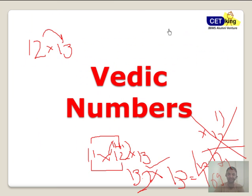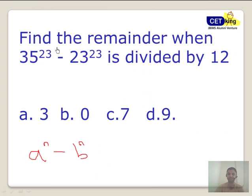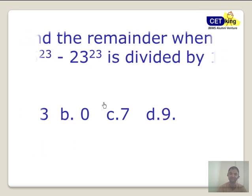From today onwards, you just have to check whether the power is odd or even. The power is odd. All you have to do is replace this with 1. 35 minus 23 equals 12. 12 divided by 12. Answer is 0. Done. 10 second job. Let's keep a few more examples.